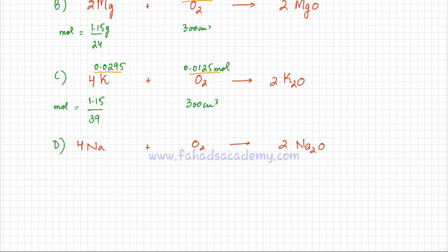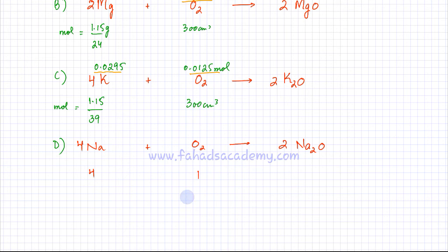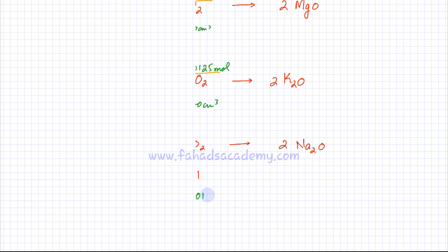We now focus on the last option, D, which must be correct as it is the only one remaining. Option D is sodium. Sodium reacts with oxygen to produce sodium oxide, Na₂O. The balanced equation gives 4Na + O₂ → 2Na₂O, so one oxygen reacts with four sodium atoms — a 4:1 ratio. The moles of oxygen from 300 cm³ are 0.0125 moles.